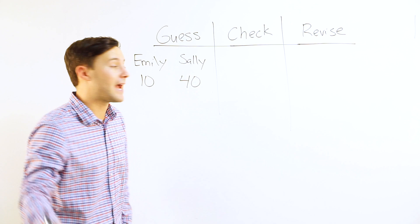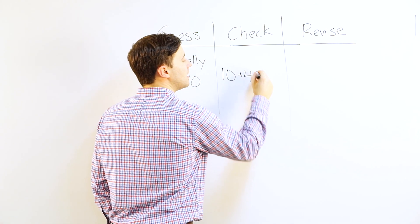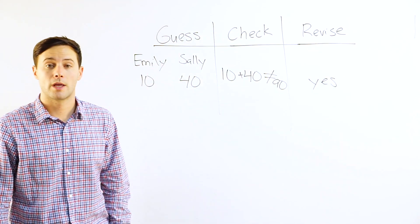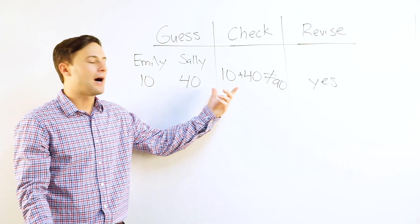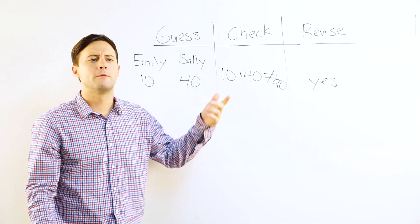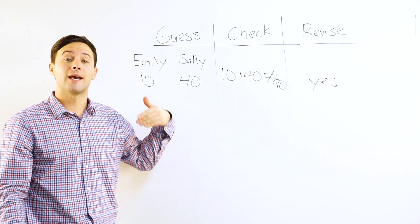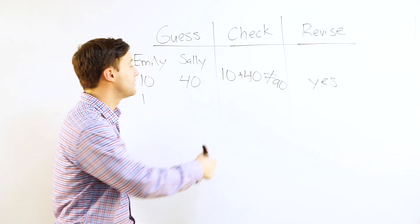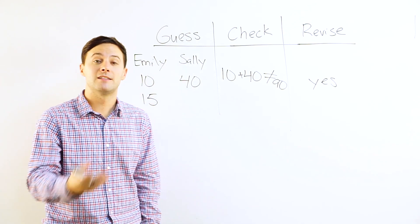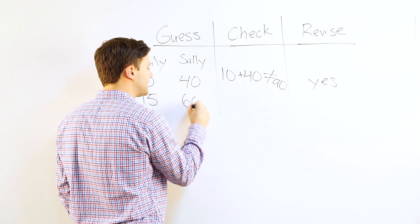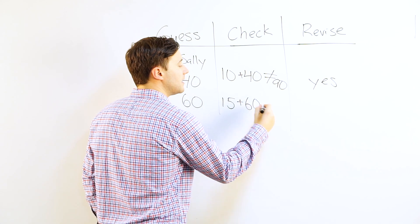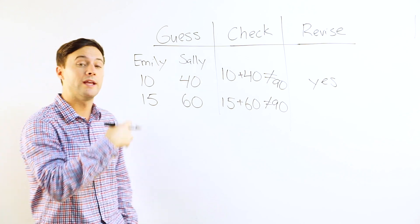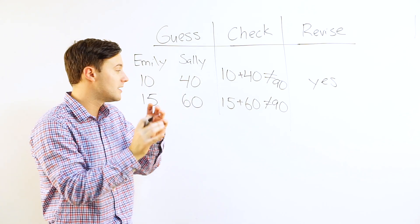Now it's time to check: together they have to have 90. Well, 10 plus 40 does not equal 90, so I need to revise. I'm looking at this and thinking: what information did I just gather? How can I make my guess better? I know that 10 plus 40 is not even close to 90, so I've got to increase my guess for Emily. I'm going to say 15. Emily is 15, Sally is 4 times that — 60. Now let's check: is 15 plus 60 equal to 90? No, it is not. But we are getting closer and in the right direction.